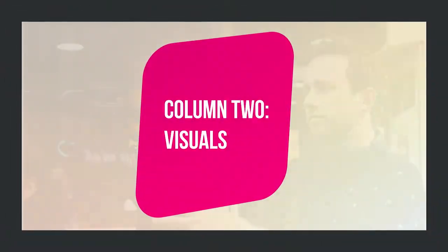Column 2 – Visuals. The second column in a corporate video script explains what visuals will be shown on-screen during each scene. Traditionally, this will be footage that's captured during a filming day, but it can also include details on stock footage, photography or animated scenes for projects such as explainer videos.